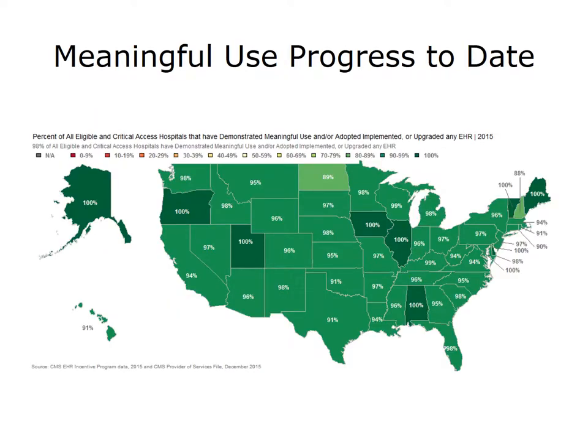As of December 2015, 90% of hospitals eligible for the Medicare and Medicaid EHR incentive programs achieved meaningful use of certified health IT. According to CMS EHR incentive program data, more than 90% of large, medium, small rural, and critical access hospitals were meaningfully using certified health IT, and more than four in five small urban hospitals were meaningfully using certified technology. Children's hospitals have the lowest rate of meaningful use achievement, with over two in three children's hospitals having achieved meaningful use.